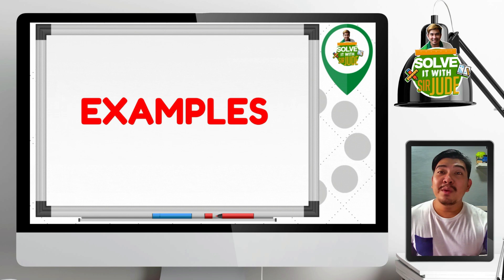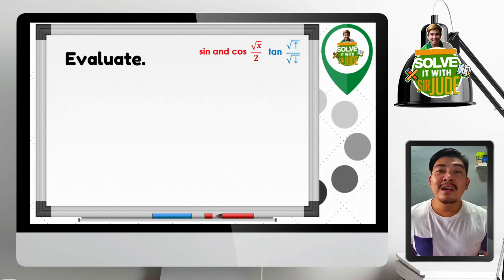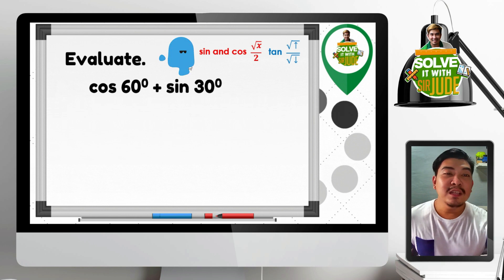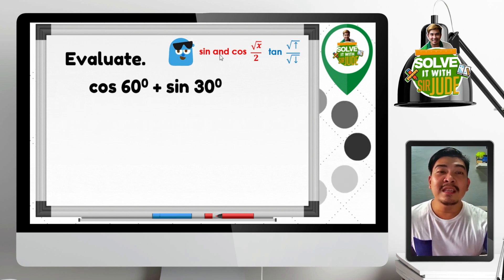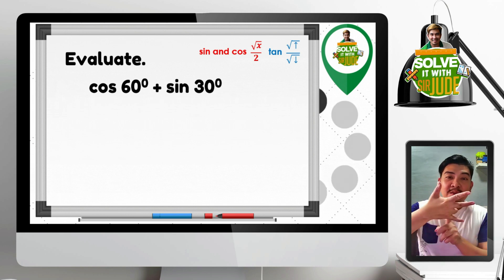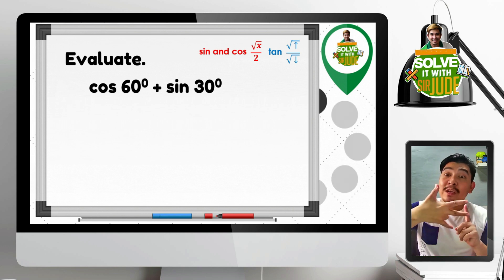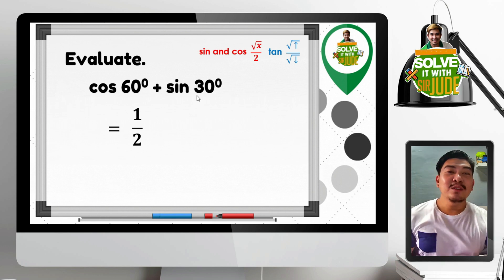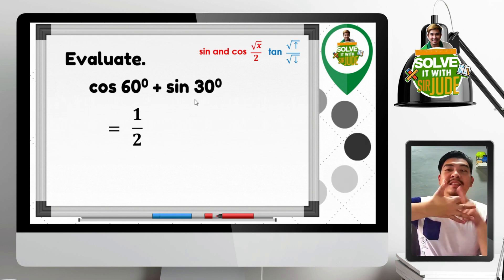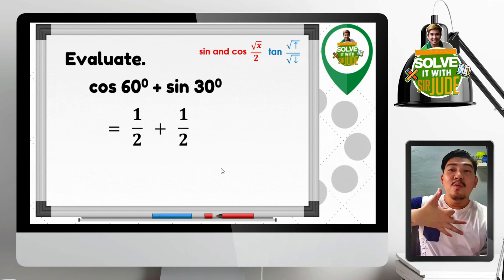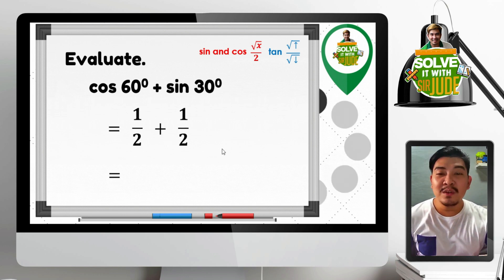Let us evaluate some trigonometric expressions using these special values. For example: cosine 60 degrees plus sine 30 degrees. Cosine 60 degrees — fold the 60 degree finger, 1 finger below — square root of 1 over 2 equals 1 half. Sine 30 degrees — fold the 30 degree finger, 1 finger above — square root of 1 over 2 equals 1 half. So 1 half plus 1 half equals 1.